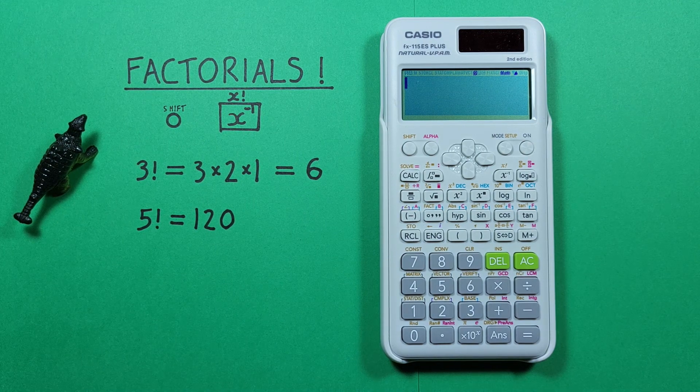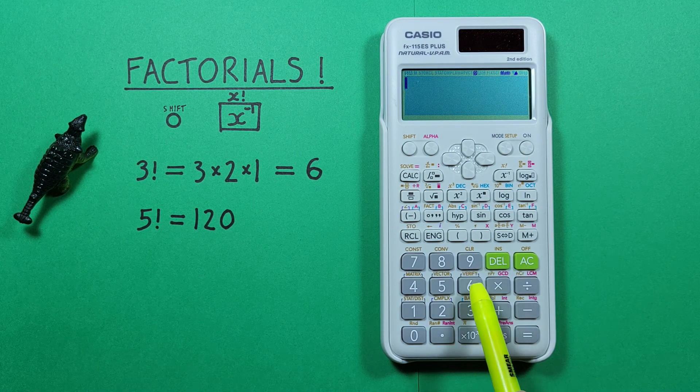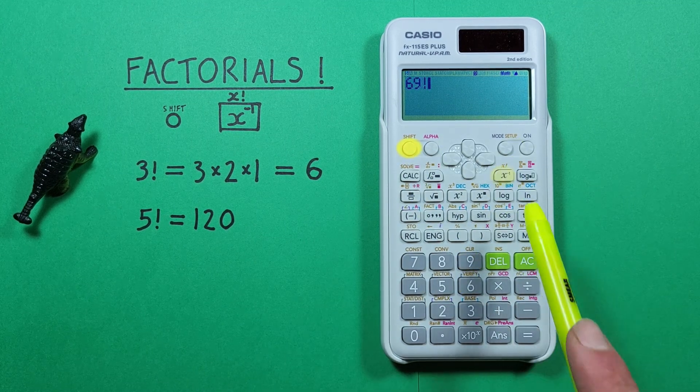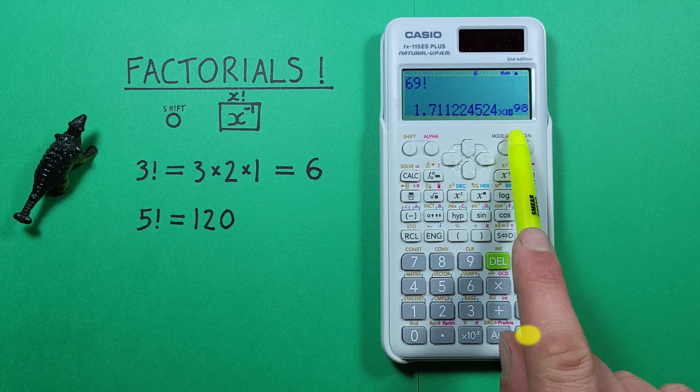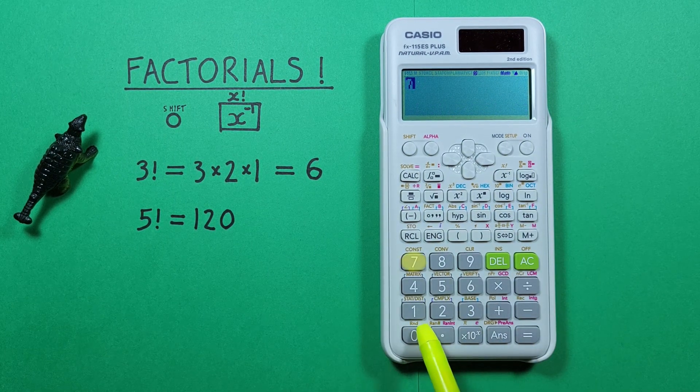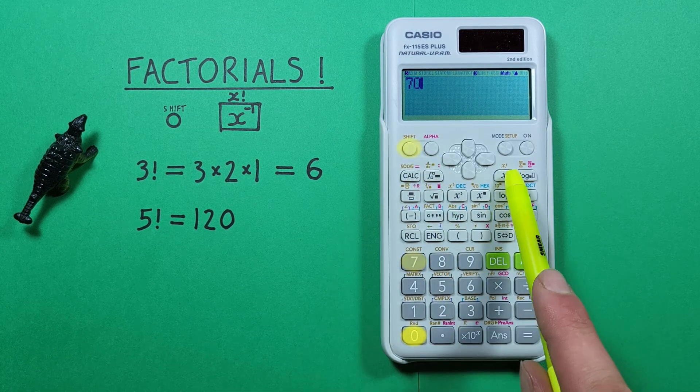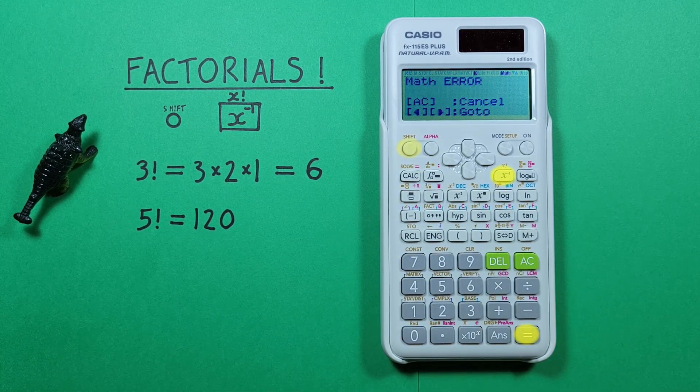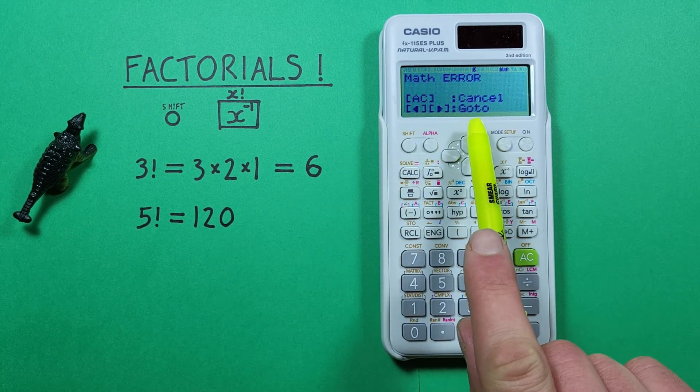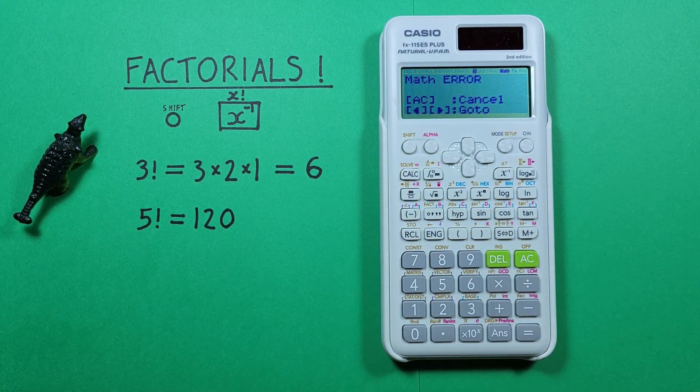In fact the largest factorial we can do is 69 factorial on this calculator which gives us this result but if we try to do 70 factorial we get that error. So if you're getting that error make sure you're not trying to do too large of a factorial.